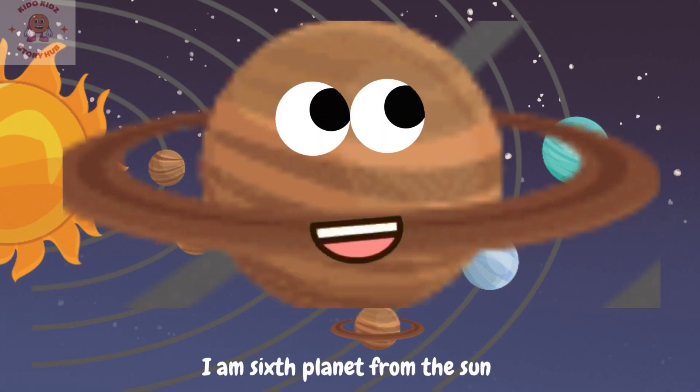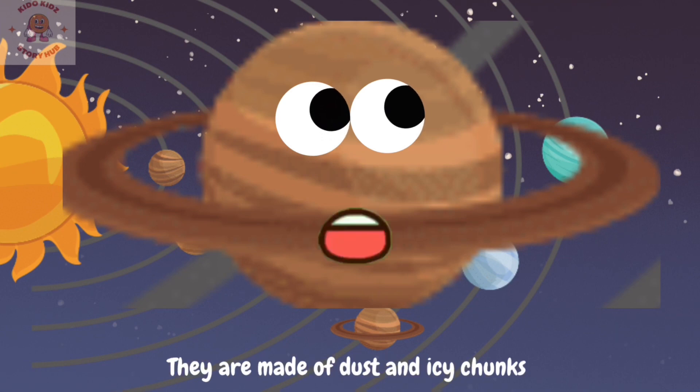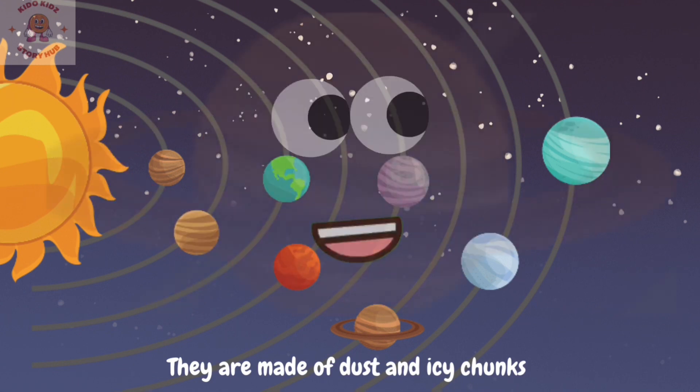My name is Saturn. I am brown in color. I am the sixth planet from the sun. My outer rings are extremely thin. They are made of dust and icy chunks.